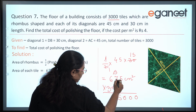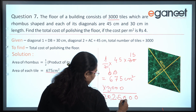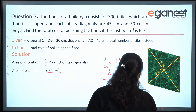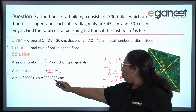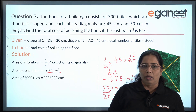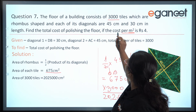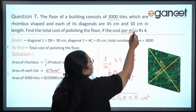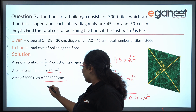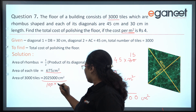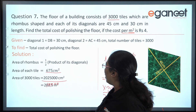The total area of the floor is 2,025,000 cm square. But the rate given is per meter square, so we need to convert centimeter square into meter square. Dividing by 10,000, the area becomes 202.5 meter square.